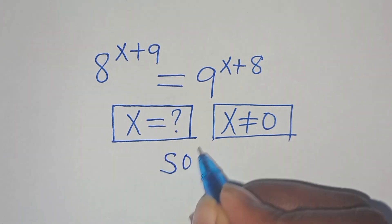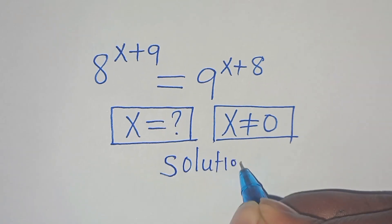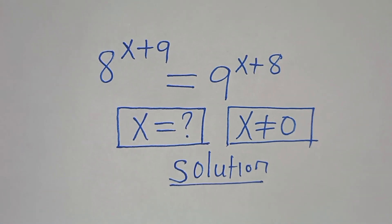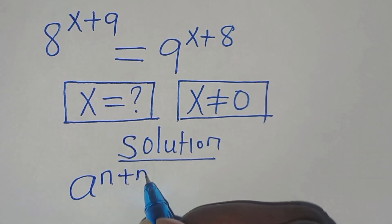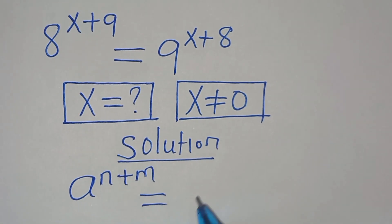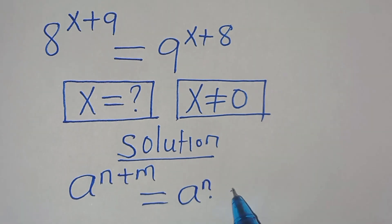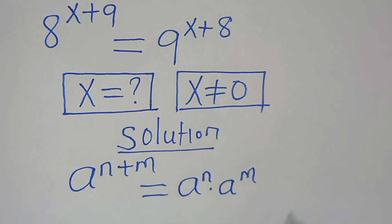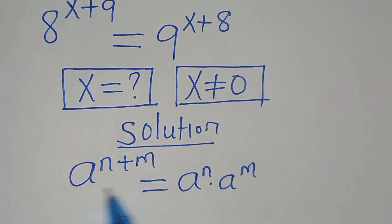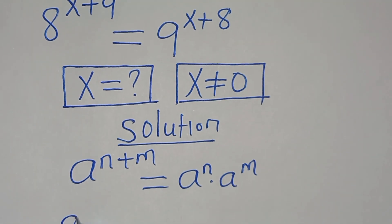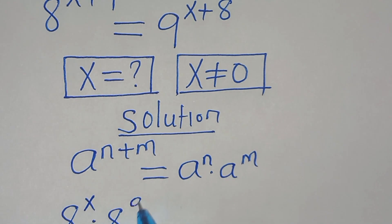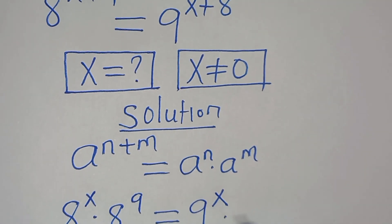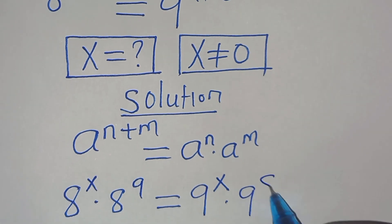Let's work out a solution. This exponential equation is in the form of a to the power of n plus m, which we can express as a to the power of n times a to the power of m. Applying this exponent property, we have 8 to the power of x multiplied by 8 to the power of 9, equal to 9 to the power of x multiplied by 9 to the power of 8.